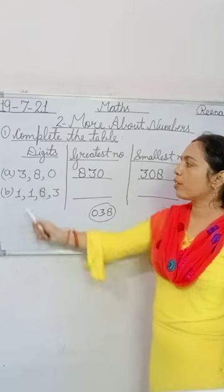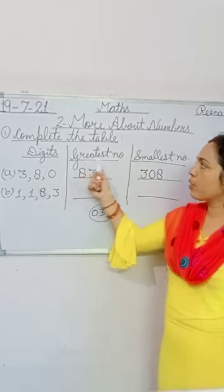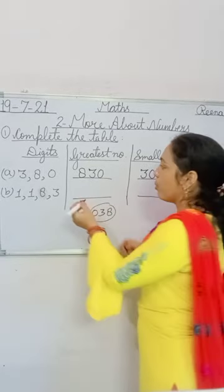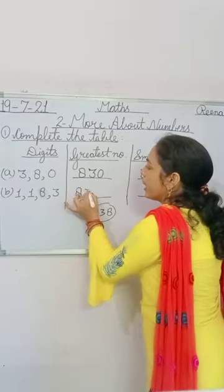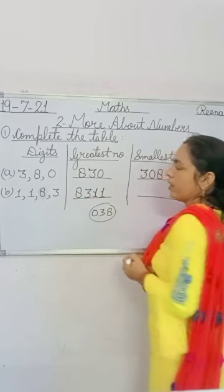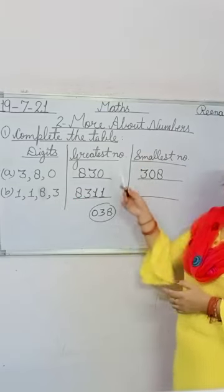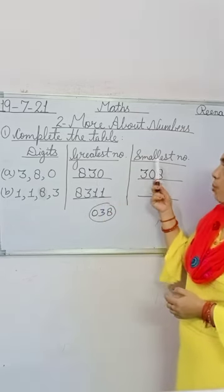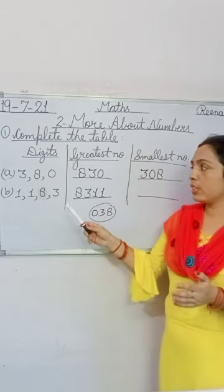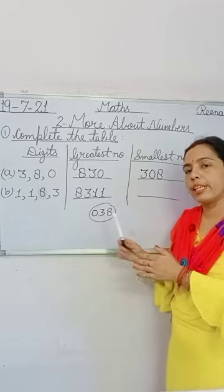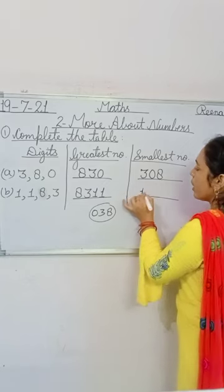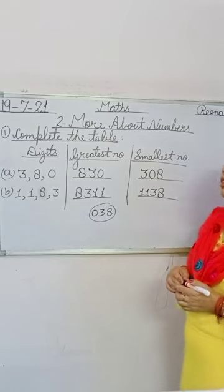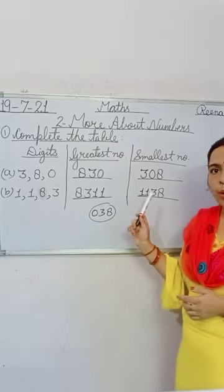In part B, you have given the digits 1, 1, 8, 3. For the greatest number, we arrange from greatest to smallest: 8311 is the greatest number. For the smallest number, we arrange from smallest to greatest: 1138 is the smallest number.